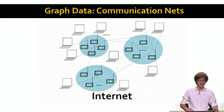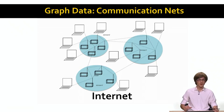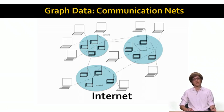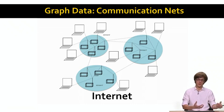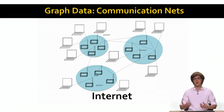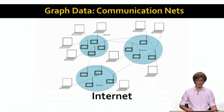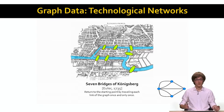The internet is another case that can be studied as a graph. We have computers or routers talking to each other, and this can be represented as a dynamic network of nodes representing computers or routers, with physical links between these machines as the edges of the network.